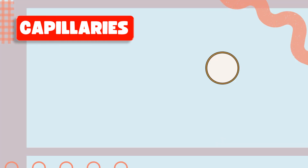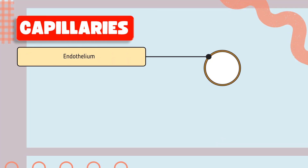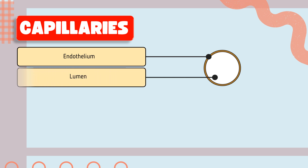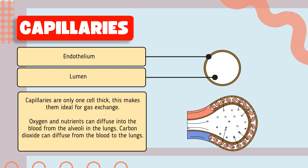Regarding their structure, capillaries are similar to veins. They have an outer membrane formed of endothelium and the center part is the lumen. The lumen here is very small compared to arteries and veins — you can say it is microscopic. These capillaries allow the exchange of gases within the lungs.